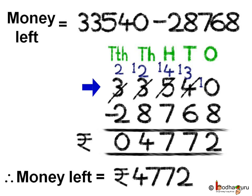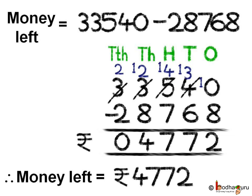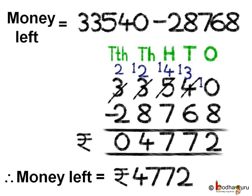Let us do the subtraction: 33,540 minus 28,768. Starting from the ones place, we need to borrow from the tens place. So, at the tens place, 4 becomes 3 because it is lending to the ones place, and the ones place becomes 10. Now, 10 minus 8 is equal to 2.